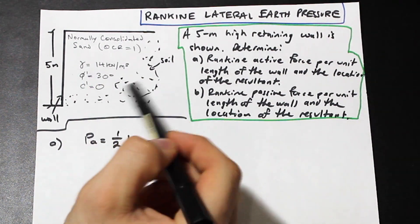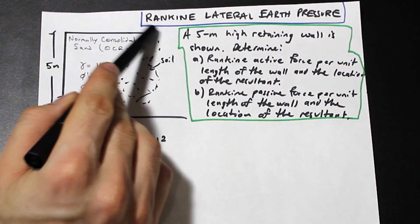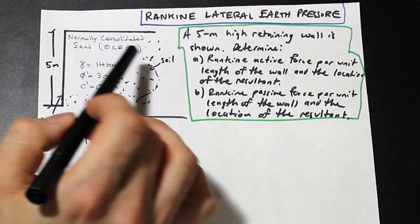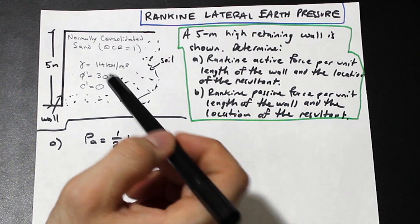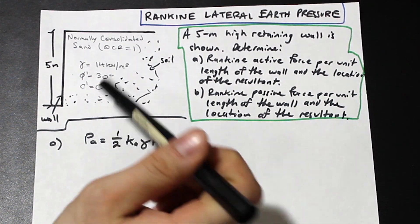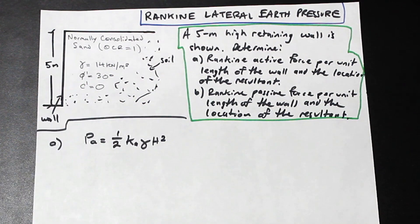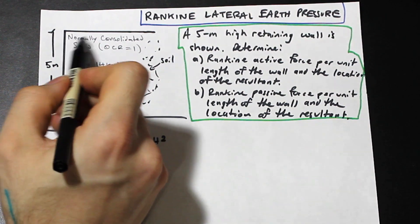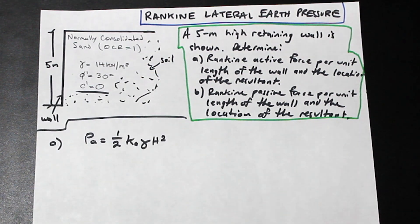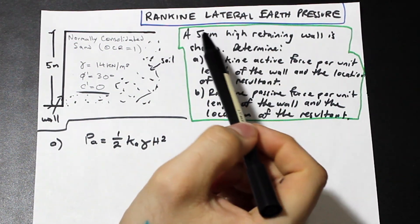We're given a soil sample here. We have this backfill — this is the soil surface — and we have this retaining wall here at five meters. We have normally consolidated sand, which is important. We have the unit weight of the soil, the angle of friction, and the cohesion of the soil. The cohesion is zero, and we're also given normally consolidated sand.